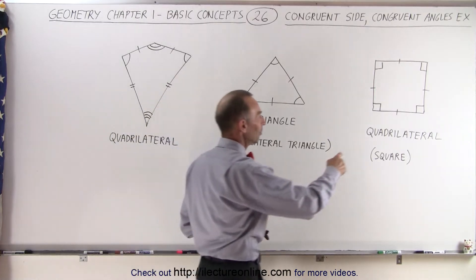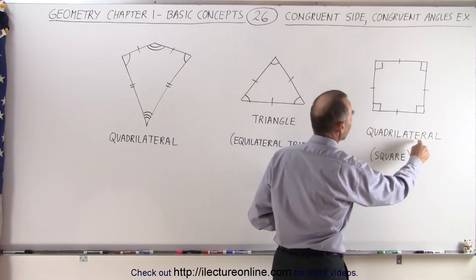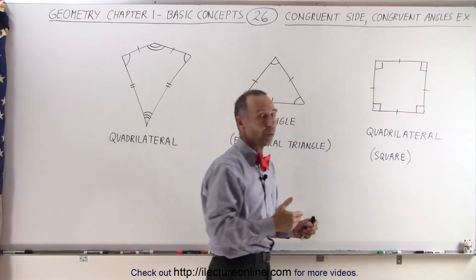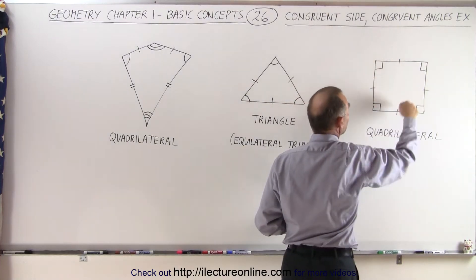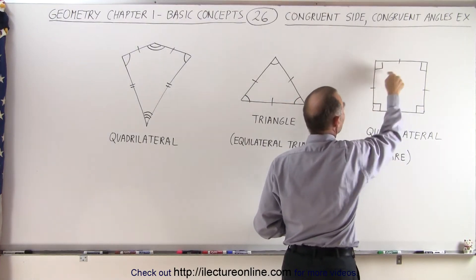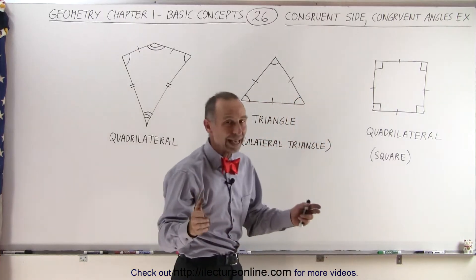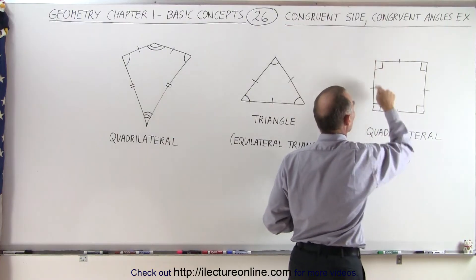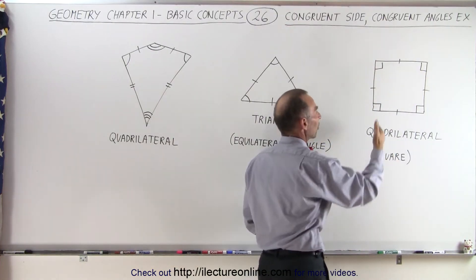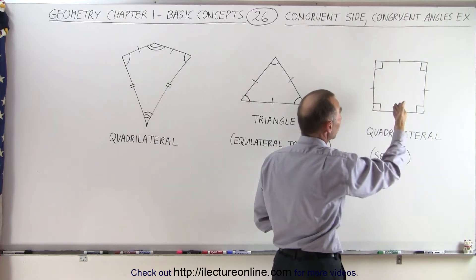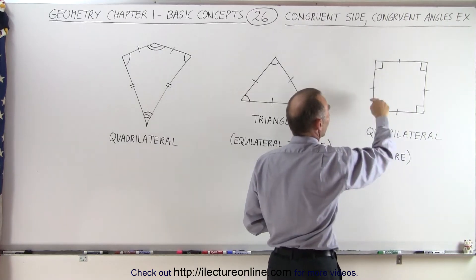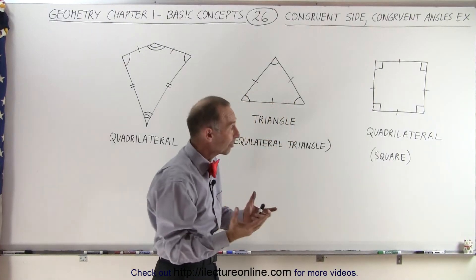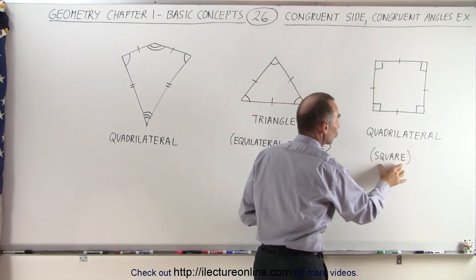Taking a look at this, it is called a quadrilateral. Quadri means four and lateral means sides, so this figure has four sides. The little thick marks, or tick marks, indicate that these four sides are congruent — they have the same length. These symbols here indicate that these angles are right angles, so they're all 90 degrees, which means they all have the same measure. Therefore, these four angles are congruent and those four sides are congruent, making this quadrilateral a square.